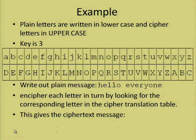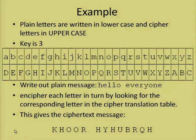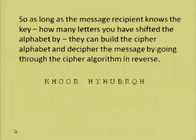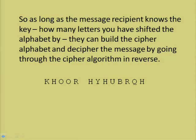So we write out a plain text message. Let's take as our plain text message, 'hello everyone.' We encipher each letter in turn by looking at the corresponding letter in the cipher translation table, and this gives the cipher text message. The first letter is H in your message — H corresponds to K. The next letter is E, which corresponds to H. L corresponds to O. L again corresponds to O again. O corresponds to R, and so on. Down the bottom there we have our enciphered message, which now can't possibly be read by anyone who doesn't know the key. So long as your message recipient knows the key — how many letters you've shifted by — they can build their own copy of the cipher alphabet and decipher the message by going through the algorithm in reverse. Then they would get your message back: 'hello everyone.'